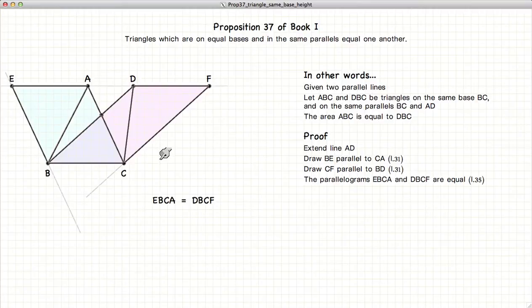Now if you look at the two resulting parallelograms, we have B, E, A, C, and B, C, F, D.